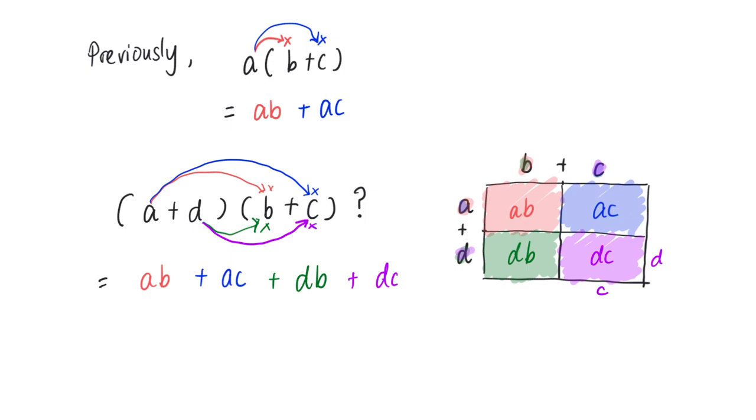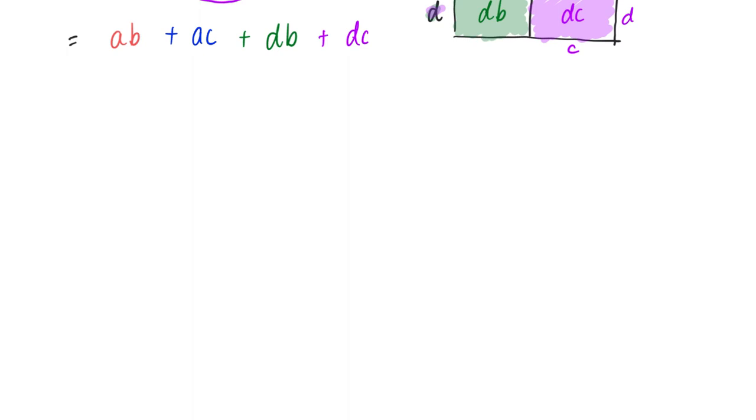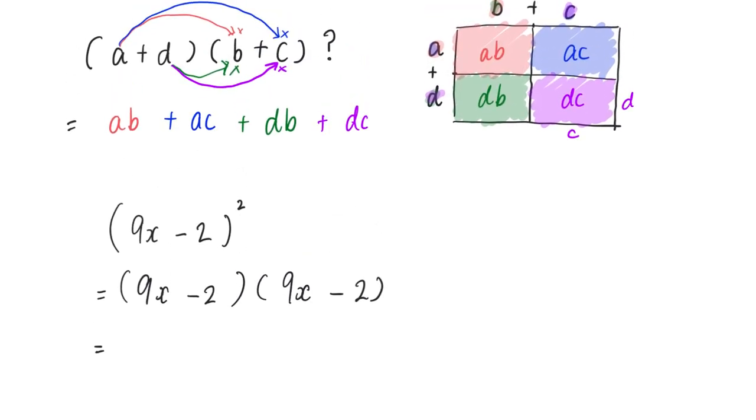And that basically is how we expand and simplify this type of algebraic expression. Going back to your question, we would have (9x - 2)², which is essentially (9x - 2) times (9x - 2).